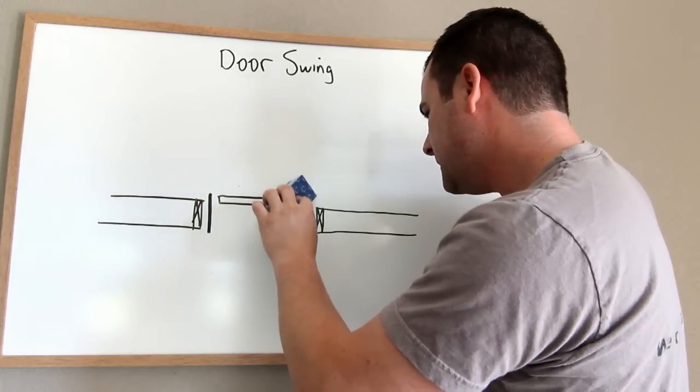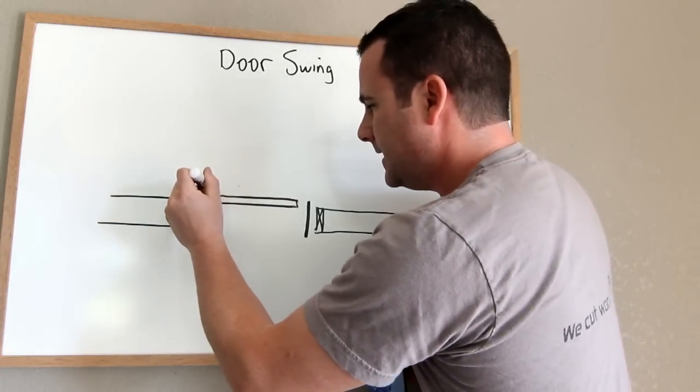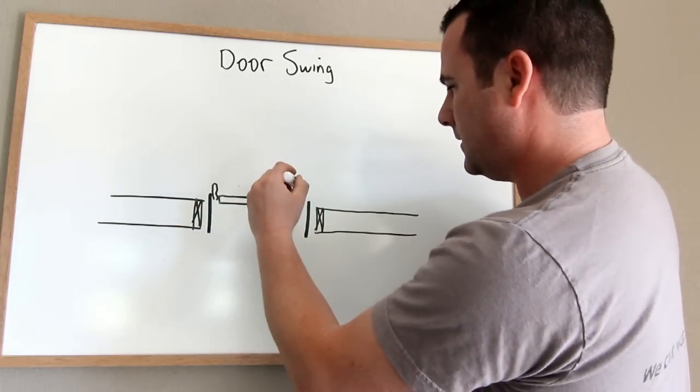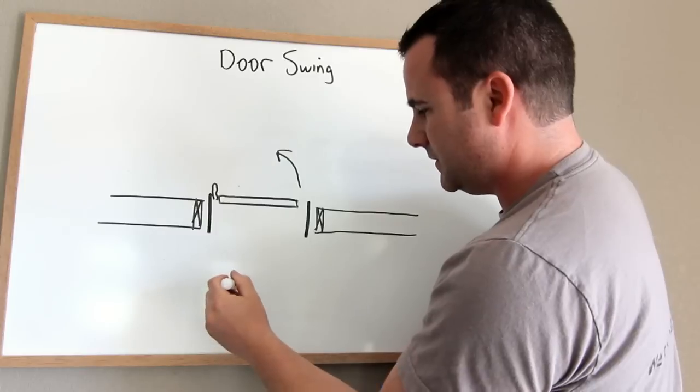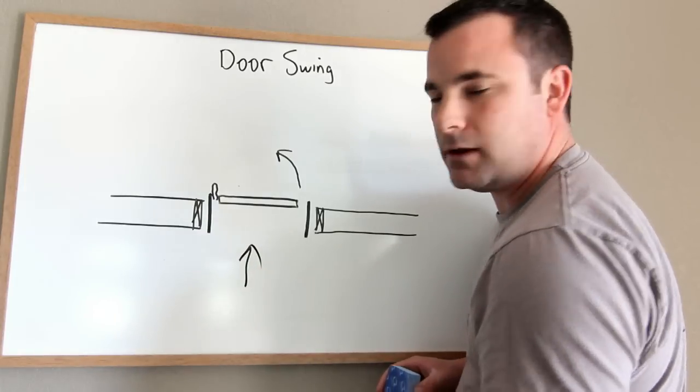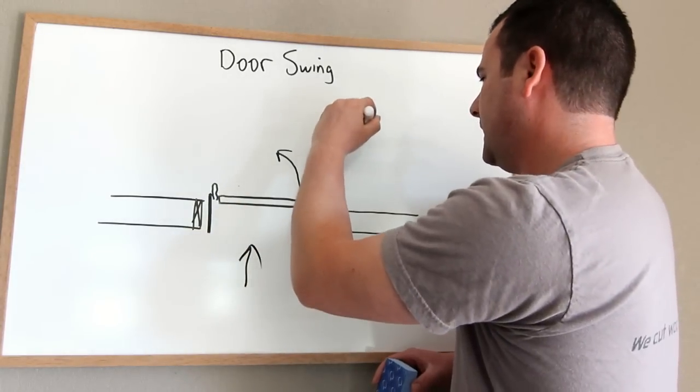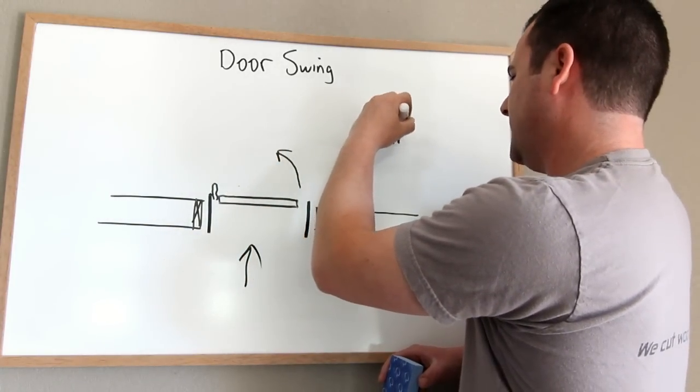So now your hinges are on this side. So now standing at the door, hinges are on the left. So if you're just standing at the door looking at it, hinges are on the left, that's a left hand, and it swings to the inside, so a left hand in swing.